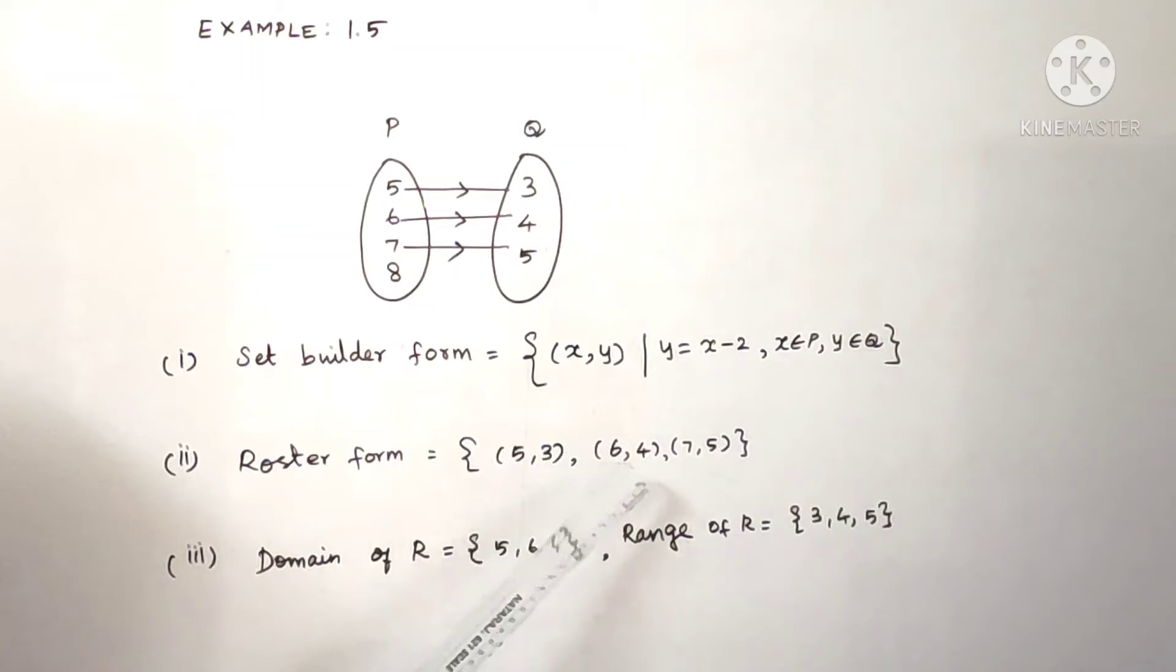Range is y. So 3, 4, 5. Range of R is {3, 4, 5}. The second set is the range. X is the domain, Y is the range.